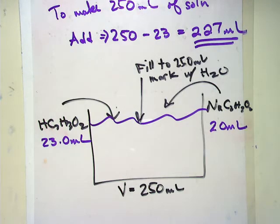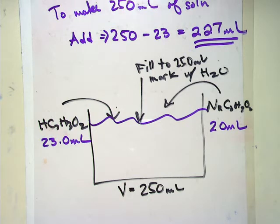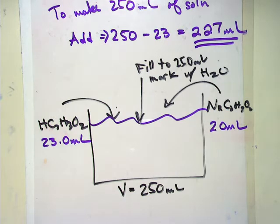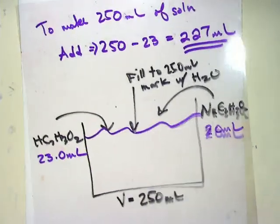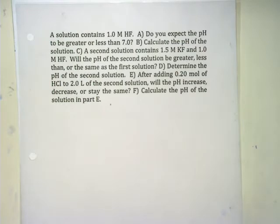This next problem mimics the one we did last time in class for buffers. Let's start on part A. I have 1 molar HF. Is the pH going to be less than or greater than 7? Less — because it's an acid. That was a gimme. B: now calculate that pH. This is from the previous chapter. You write your general equation for an acid and use an ICE table.